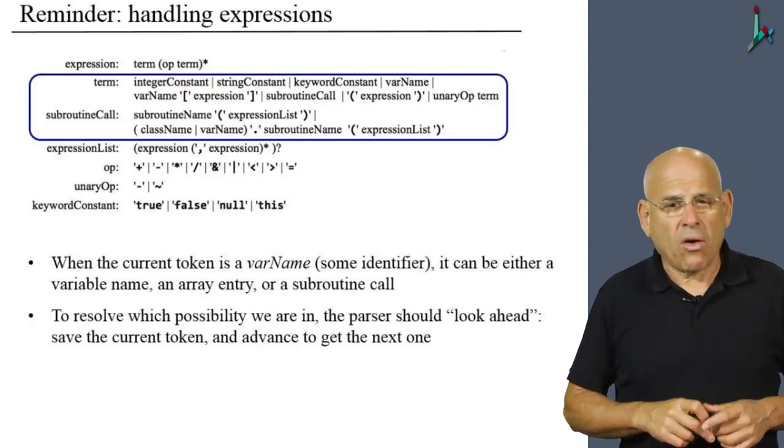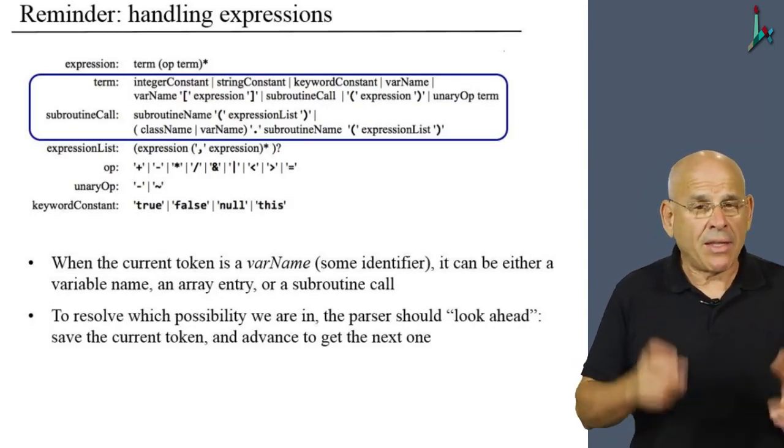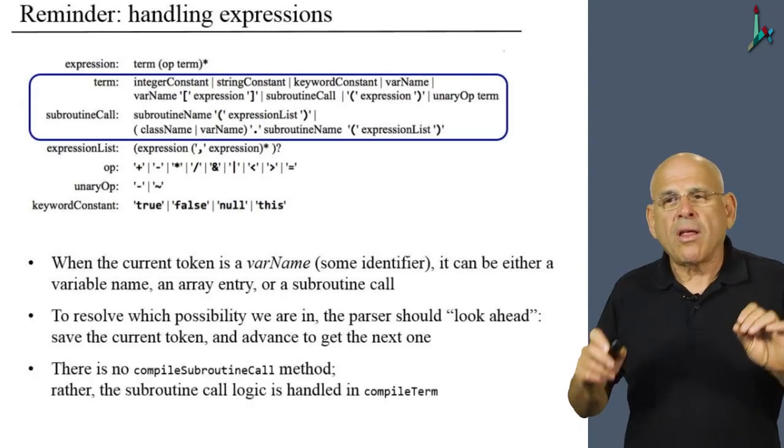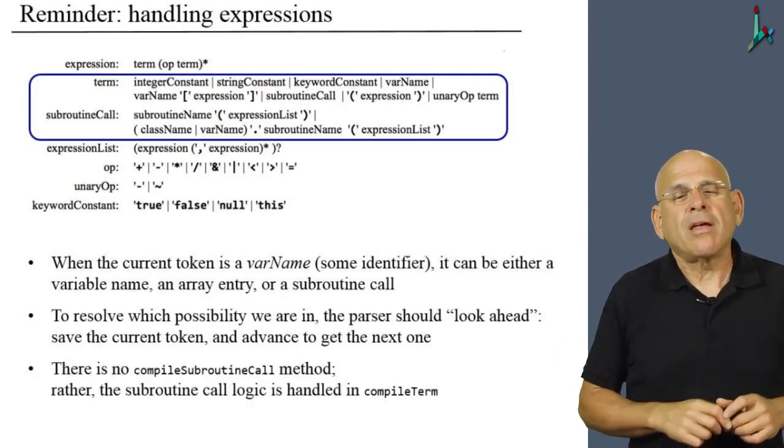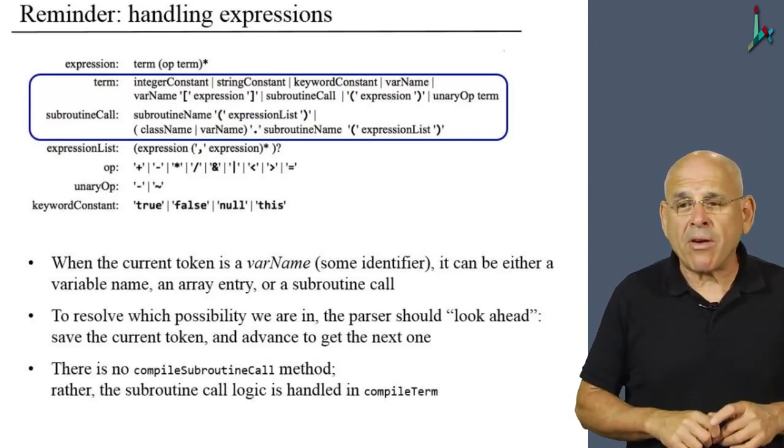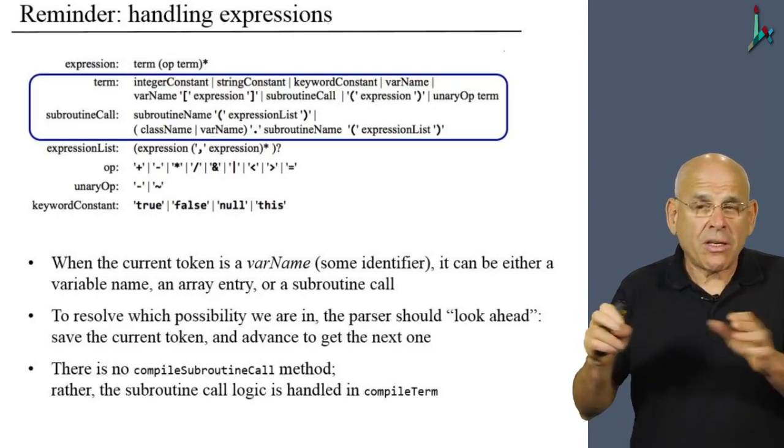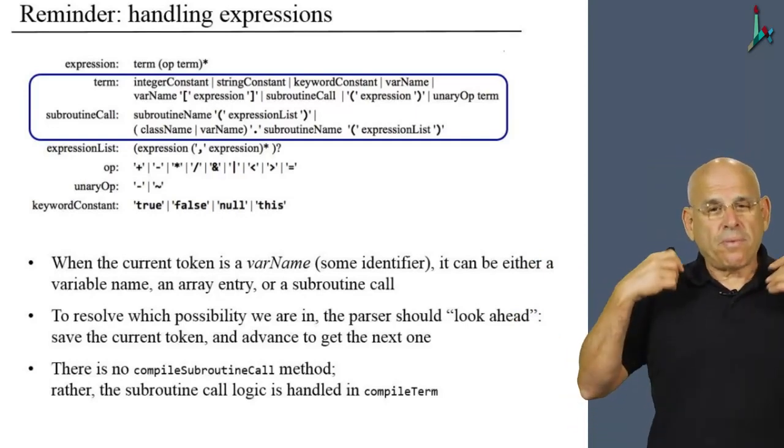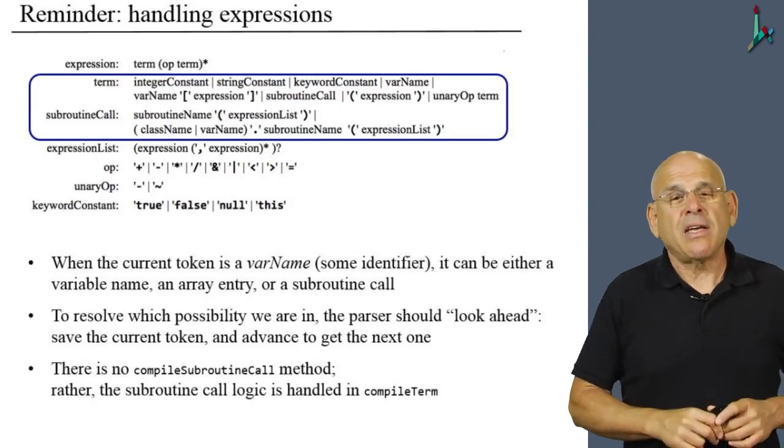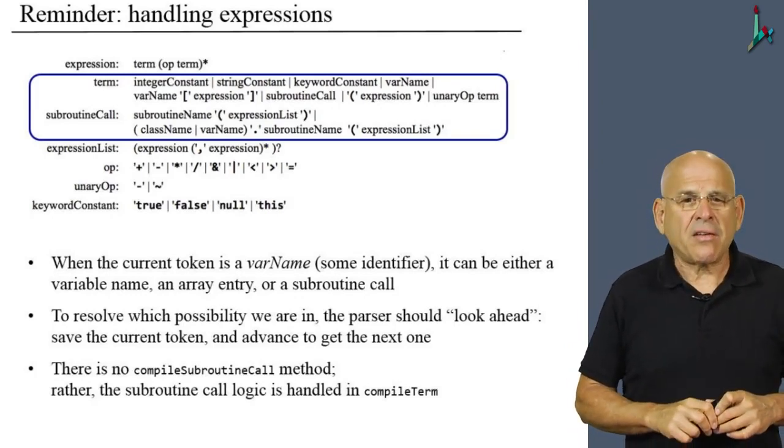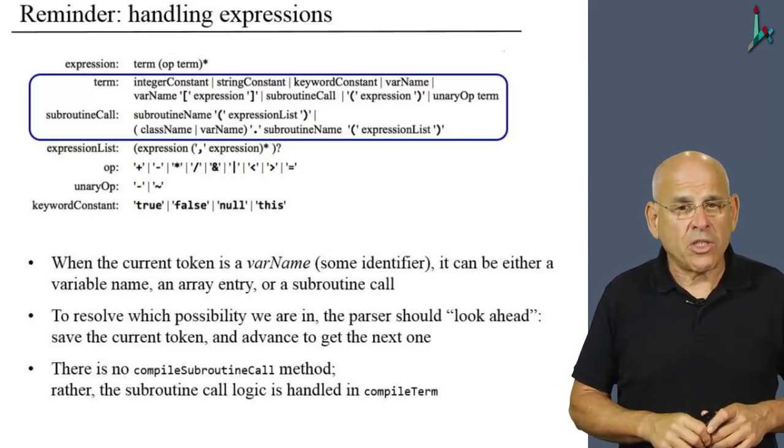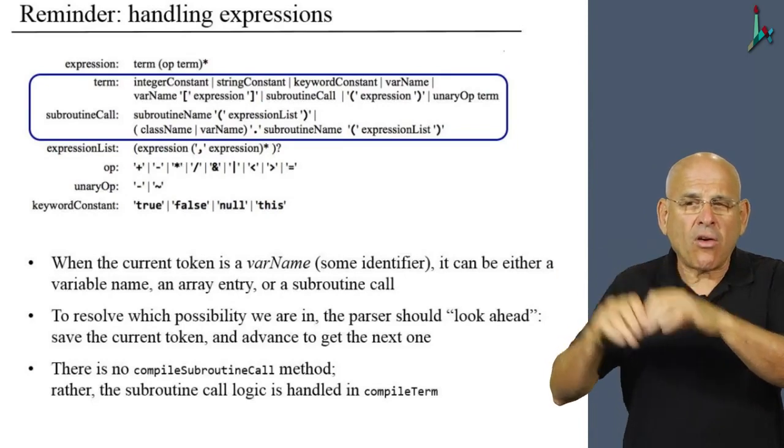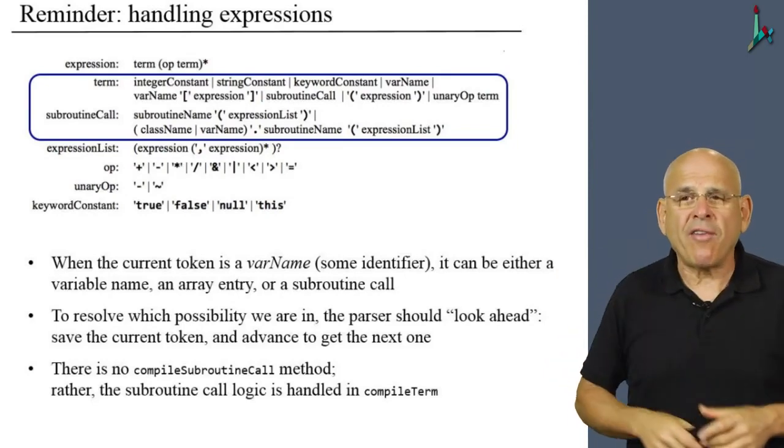Now what about subroutine call? It looks like subroutine call is a separate rule in the grammar, and indeed it is. But for various reasons, we decided that the subroutine call will not be handled by a separate compilation method like other rules in the grammar. But rather, we're going to handle the subroutine call logic, the right-hand side of the rule, as part of handling the term. When you develop the syntax analyzer, you will realize that this little advice here will result with a code which is easier to write. So once again, there will be no compile subroutine call. The compile subroutine call logic will be handled as part of handling the term.